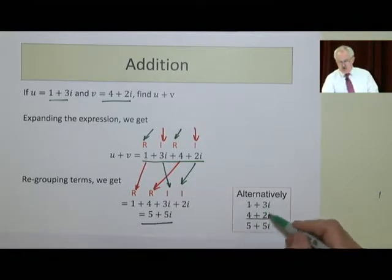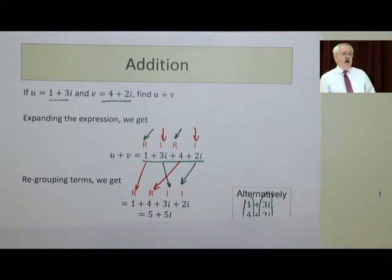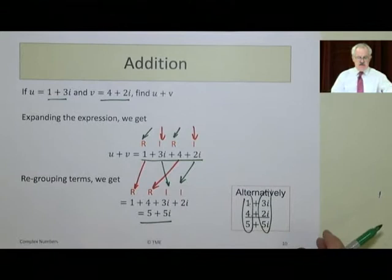Or I could have added them here. 1 plus 3i, 4 plus 2i, group them one after the other. Apples and oranges, it would be exactly the same.